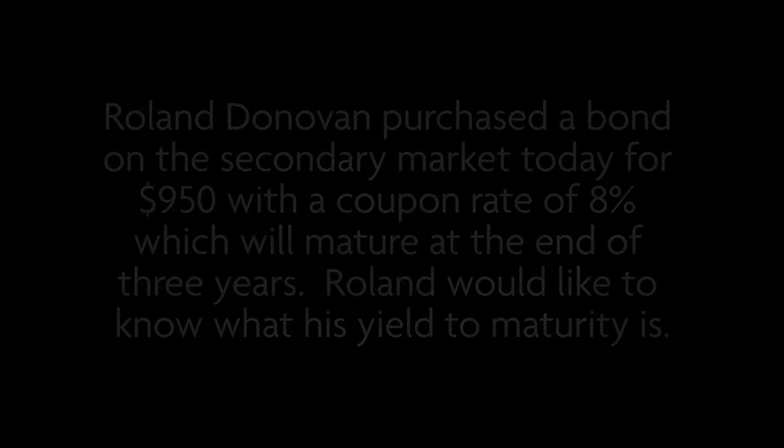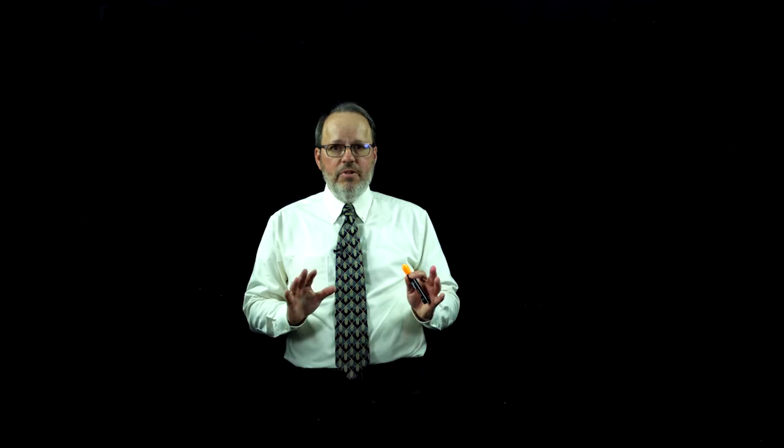Roland Donovan purchased a bond on the secondary market today for $950. It has a coupon rate of 8% and will mature at the end of three years. Roland would like to know what his yield to maturity is. In this scenario, we have Roland purchasing a bond. Now before we do our calculation, let's do our three steps.